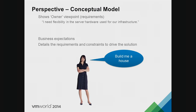Looking at the three perspectives: the conceptual model is the owner's viewpoint — this is where you get your requirements. Are they always requirements that can be implemented? Not always. For example, someone may ask for seven nines of availability but not have a budget to support it. How many people here have to support seven nines of availability? I didn't think so — I see one hand. Good luck.